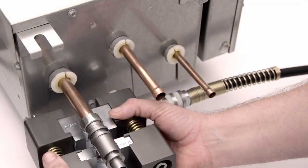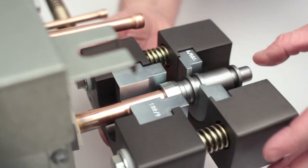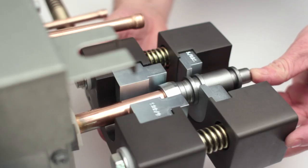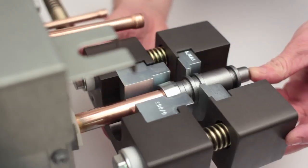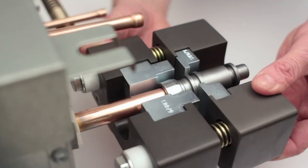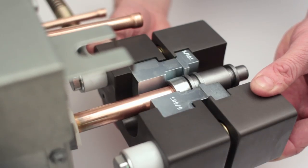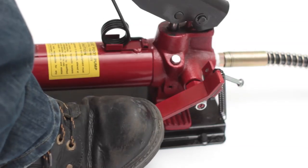Offer up the tool and locate the body and nut of the connector in the jaws of the tool. Begin pumping the foot pump. Keep pumping until the nut is fully home against the shoulder of the connector body. When the nut is fully home, release the pressure and remove the tool.